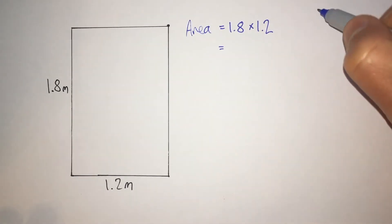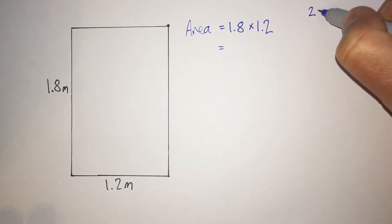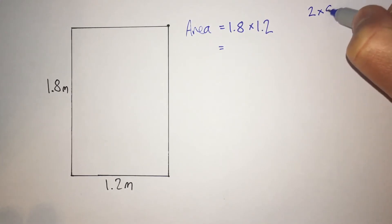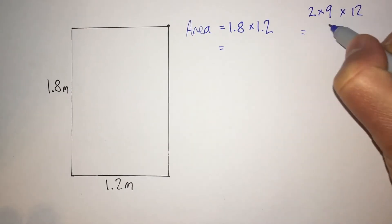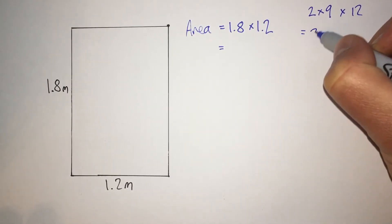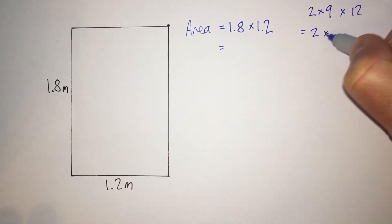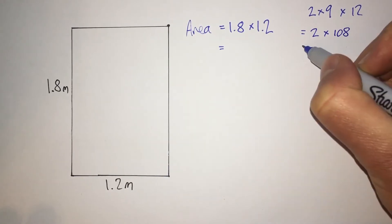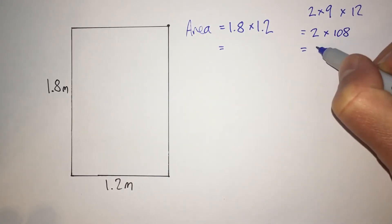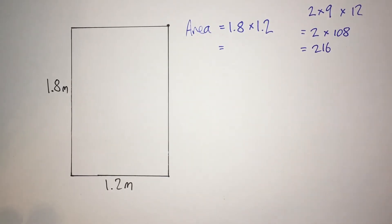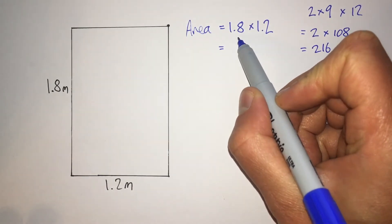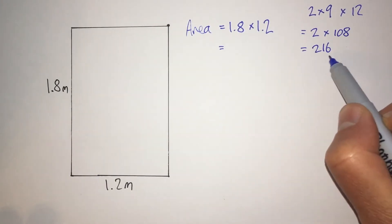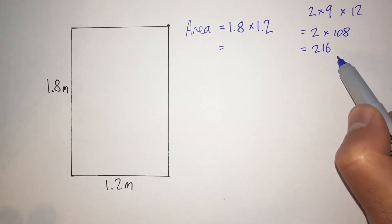Or I might notice that this is the same as 2 multiplied by 9 multiplied by 12. Now I know that 9 times 12 is 108. So this is 2 multiplied by 108, which is 216. Now I just need to match the number of decimal places in the question with the number of decimal places in the answer.